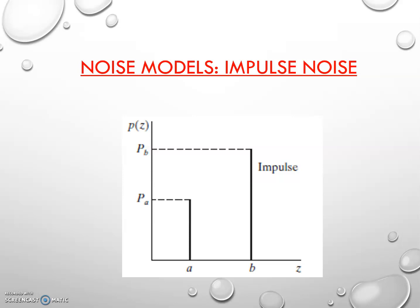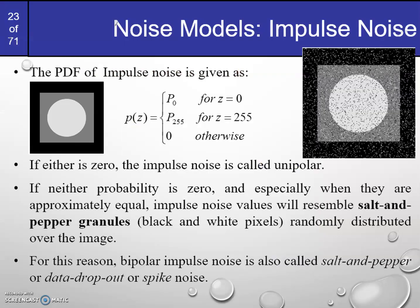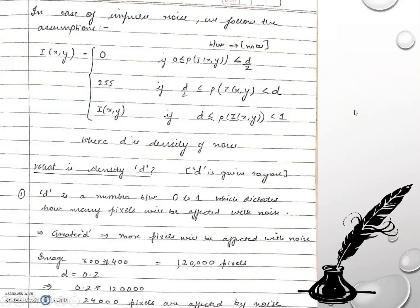It's called outlier noise because during transmission of an 8-bit grayscale image, only one or two bits out of the entire image data get corrupted by impulse noise. Because the number of corrupted bits is very small relative to the total, we call it outlier noise. Some also call it networking noise or transmission noise.